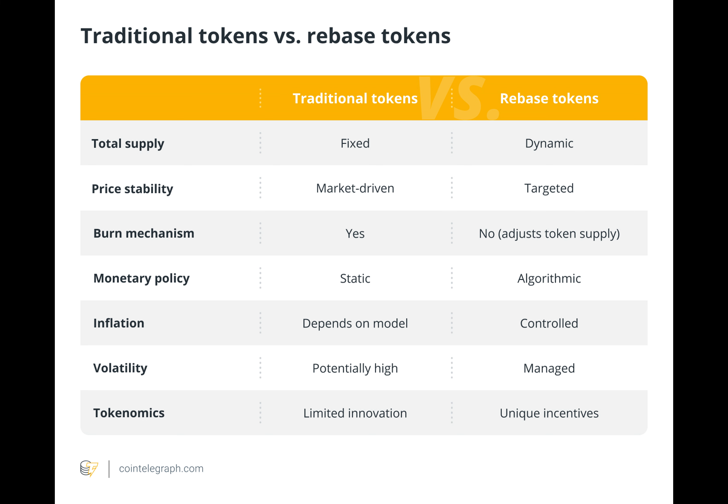Unlike traditional tokens, rebase tokens use an elastic supply mechanism to modify the total amount in circulation in response to market conditions, maintain price stability, or adhere to a target price. Rebase tokens automatically adjust each holder's balance through smart contracts to retain their proportionate share of the total supply, notwithstanding volatility, in contrast to traditional tokens whose supply changes are manual and infrequent.